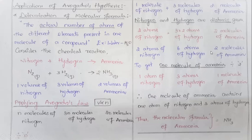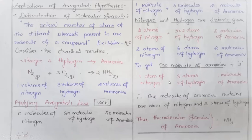So two atoms of nitrogen react with six atoms of hydrogen to give two molecules of ammonia. To find the formula of one molecule, divide the entire equation by two. That gives one atom of nitrogen and three atoms of hydrogen reacting to form one molecule of ammonia. Therefore, one molecule of ammonia contains one atom of nitrogen and three atoms of hydrogen — so the molecular formula of ammonia is NH3.